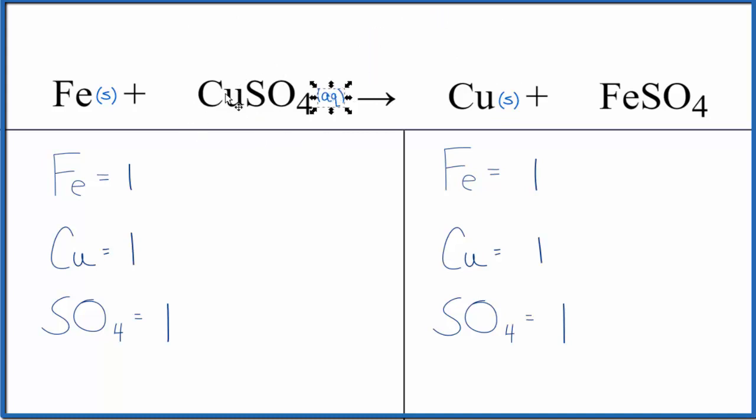It's actually going to be a blue solution because of this copper 2 ion. So we have our blue solution, and then we'll have our iron 2 sulfate over here. This is also aqueous. It's going to be a clear solution. So you start out with this blue solution and end up with a clear solution when the reaction is complete.